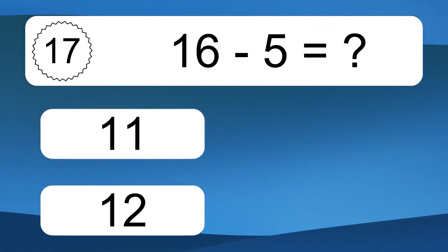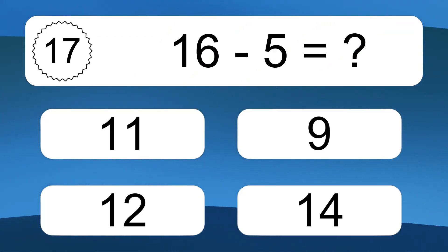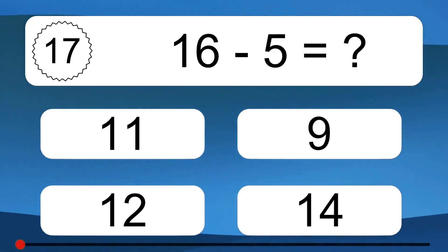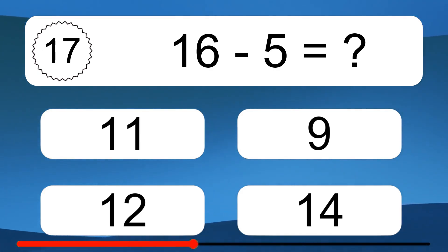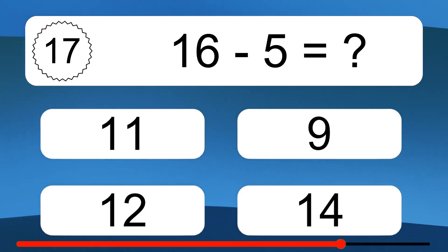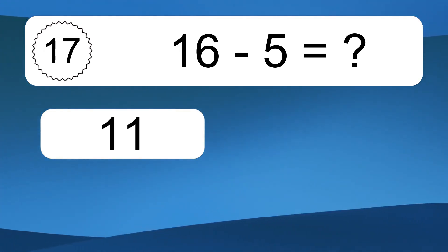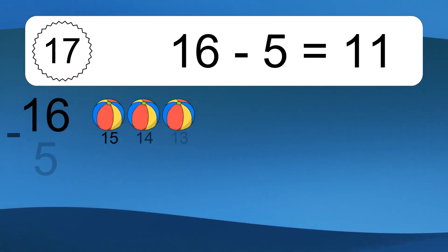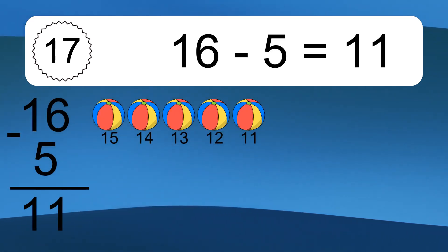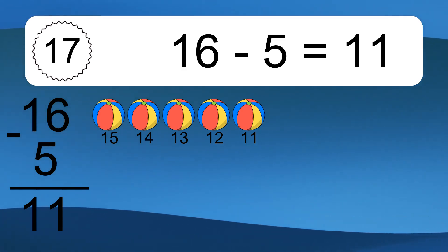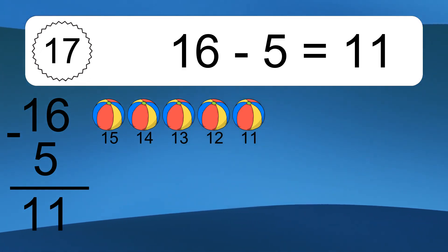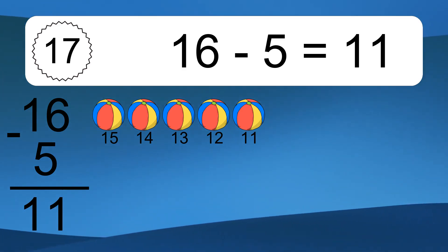16 minus 5 equals what? 16 minus 5 equals 11. Let's count it: 15, 14, 13, 12, 11.